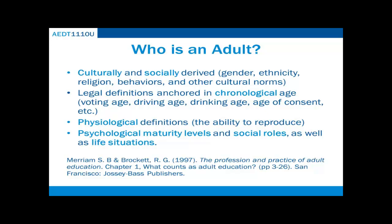There is also a variation of definitions within the same government. For example, in Canada, men and women can leave compulsory schooling at 16, they can vote at age 18, and drink at age 19. So there are even some discrepancies within our own government about what we consider to be adult.